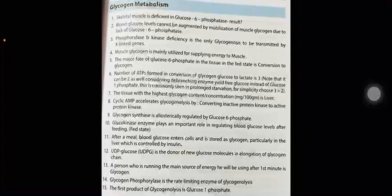Skeletal muscle is deficient in glucose-6-phosphatase. Blood glucose levels cannot be augmented by mobilization of muscle glycogen due to the lack of glucose-6-phosphatase. Phosphorylase B kinase deficiency is the only glycogenosis transmitted by X-linked genes. Muscle glycogen is mainly utilized for supplying energy to muscle. The major fate of glucose-6-phosphate in tissue in the fed state is conversion to glycogen. The number of ATPs formed in conversion of glycogen to lactate is 3, though it can be 2 if the debranching enzyme yields free glucose instead of glucose-1-phosphate. For simplicity, choose 3 over 2.